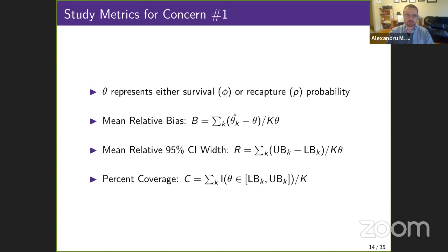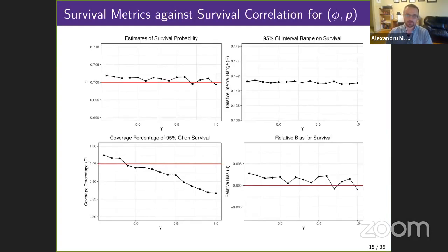To address the first concern, we calculated the mean relative bias, the estimated survival bias, the relative width of the confidence intervals, and the percent coverage of the confidence intervals across various levels of survival correlation. In this example, we fixed the recapture correlation to zero.